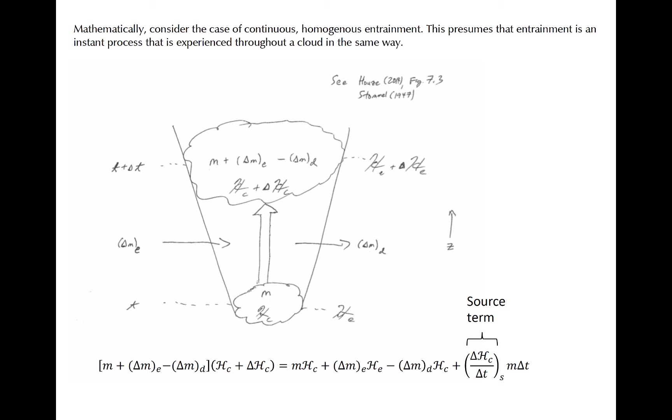So for example, this would include microphysical sources or sinks, processes that would occur even if there were no entrainment or detrainment. For example, evaporation of liquid water would cause an increase in water vapor, or in terms of this equation, an increase in H sub C. So what we have here in the equation at the bottom is essentially the end mass of the cloud times the end scripted H value is equal to the initial value of mass times scripted H, plus what comes in, minus what comes out, plus sort of an integral of the internal changes associated with microphysical processes.